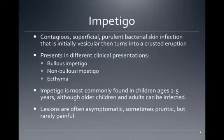Impetigo is typically found in conditions of overcrowding, poor hygiene, malnutrition, and where the skin barrier is defective, such as insect bites or scabies.